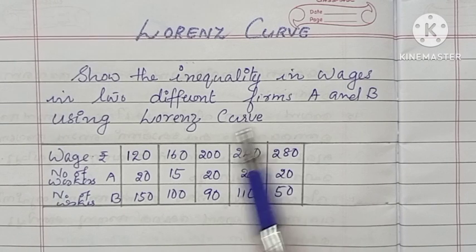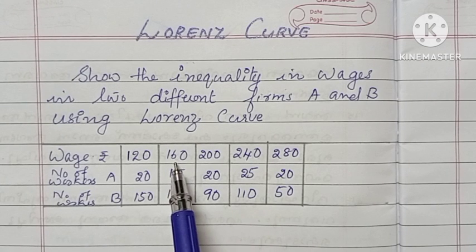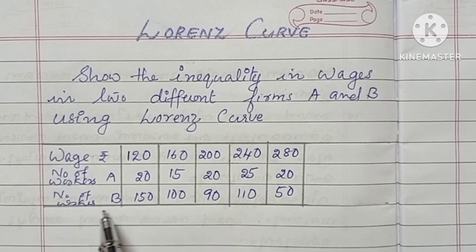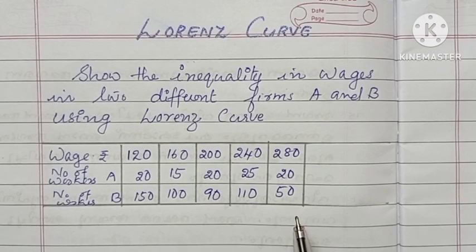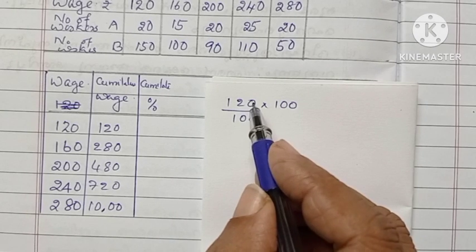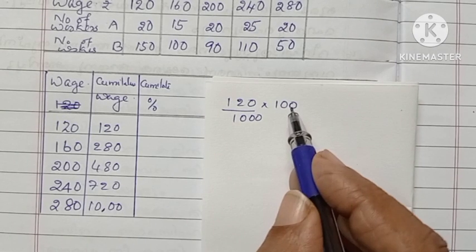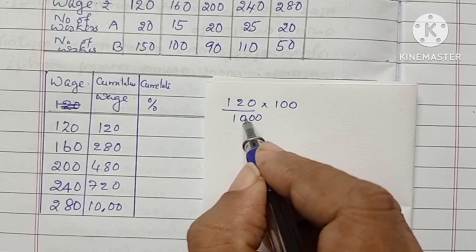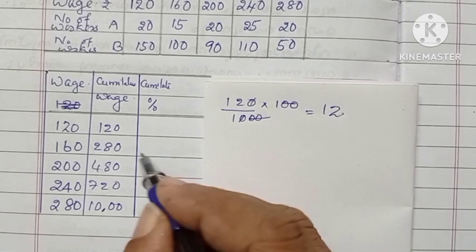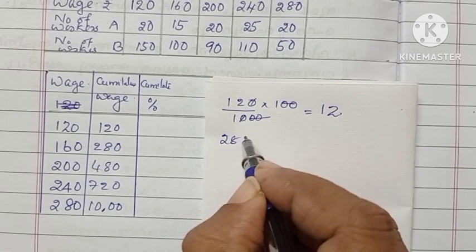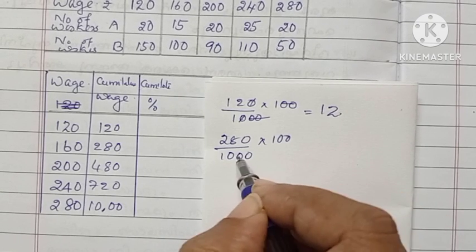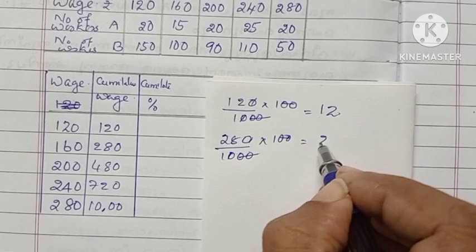The wages are given, number of workers in firm A is given, number of workers in B is also given. We can write it in the column — wages, cumulative wages. After that we have to find the cumulative percentage. The total of the wages is 1000. Therefore finding cumulative percentage we have to divide 120 by 1000 and multiply by 100. Similarly 280 divided by 1000 into 100 — the answer will be 28.